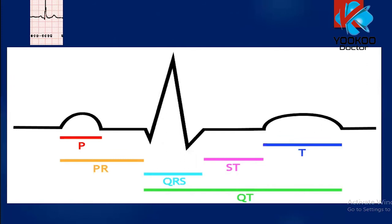Looking at one complete cycle, the first upward deflection is called the P wave. Then there is the PR interval, followed by the QRS complex, then the ST segment, and then the T wave. These are combinations of waves, intervals, and segments: PR interval, QRS duration, ST segment, T wave, and the QT interval.